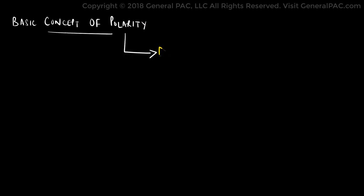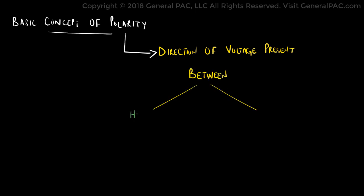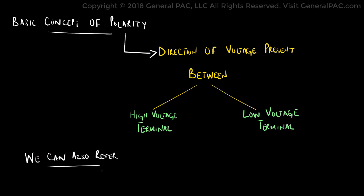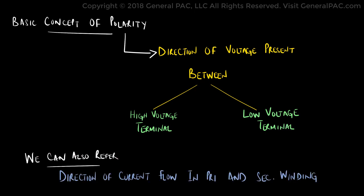Let us start by first establishing the basic concept of polarity. In simple terms, polarity means the direction of the voltage present between the high voltage terminal and the low voltage terminal. We can also refer to it as the direction of the current flow in the primary and the secondary windings.